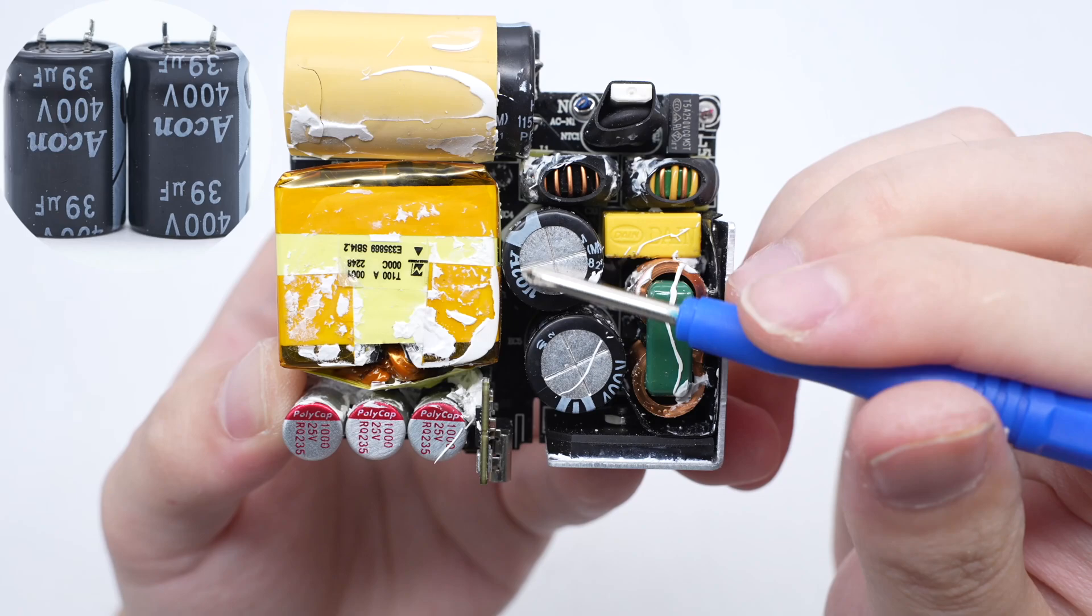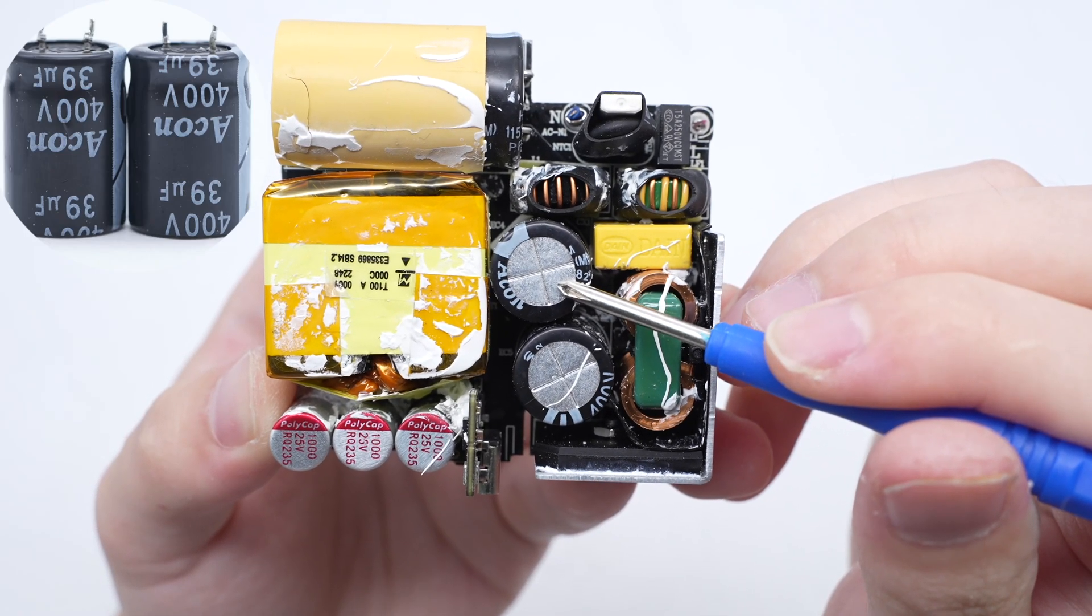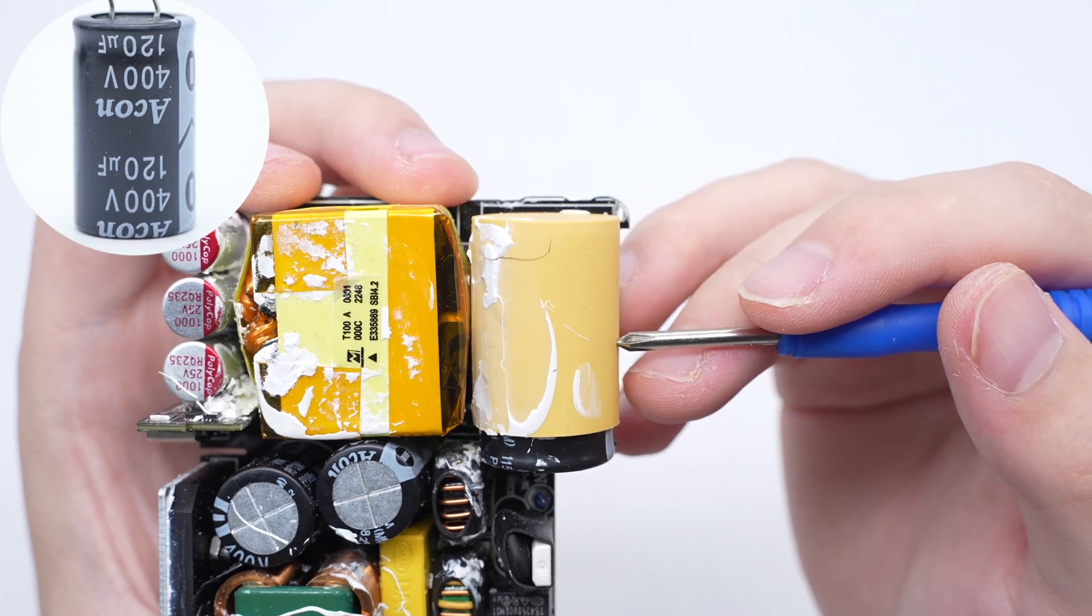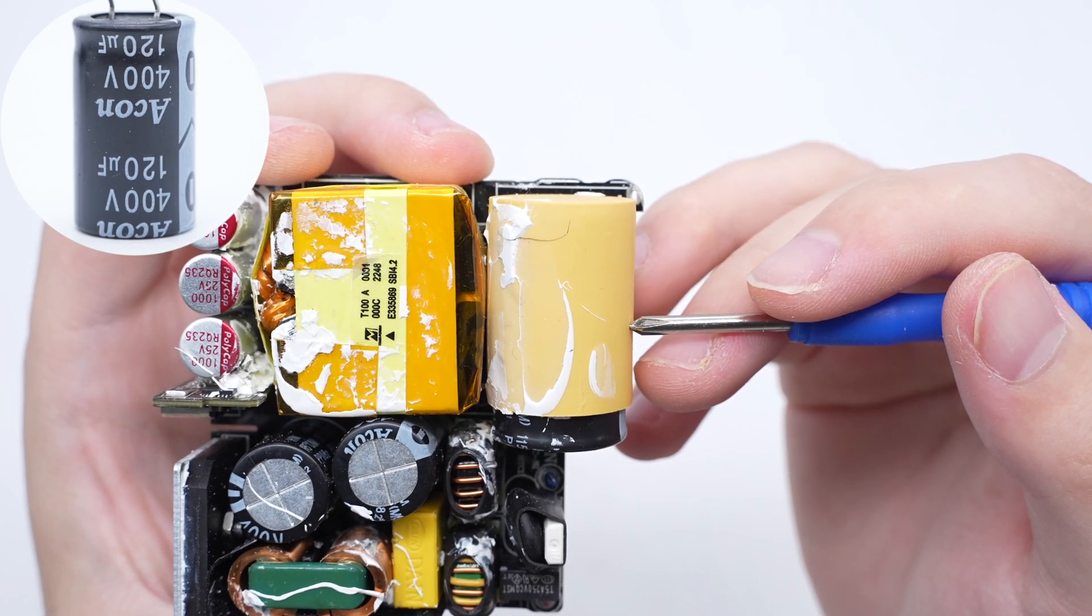These two electrolytic capacitors are from Akon. 400 volts, 39 microfarad. The third electrolytic capacitor is also from Akon. 400 volts, 120 microfarad.